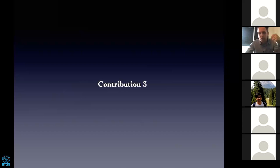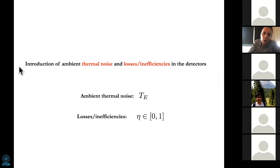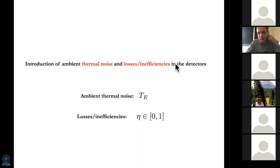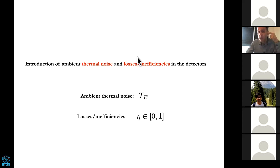Contribution three. The third contribution is to include two extra ingredients in our arguments: thermal noise — ambient noise present in the lab — and losses and inefficiencies in your detectors. I want to include this because these features are always present in real experiments, and second because they play a crucial role — more important than you might believe — in the quantumness of the Hawking effect.